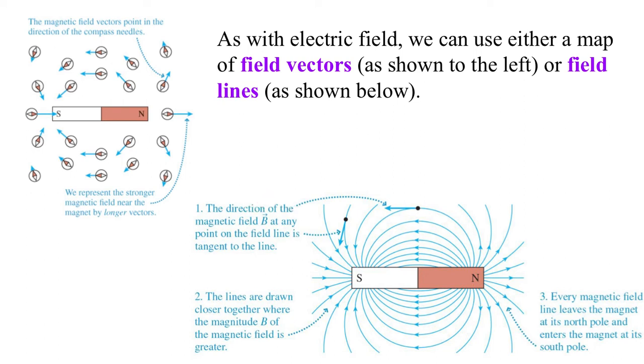And here we say the direction of the magnetic field at any point is tangent to the field line. They're drawn close together where the field is stronger, and every magnetic field leaves the magnet at the north pole and heads into the south pole.